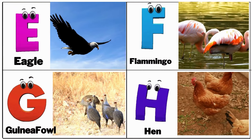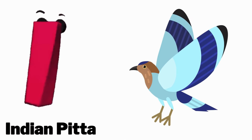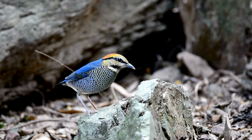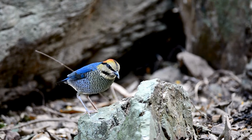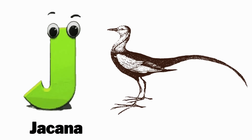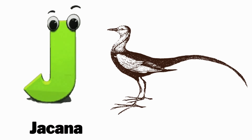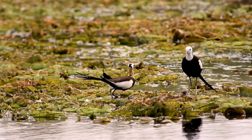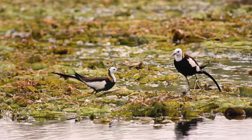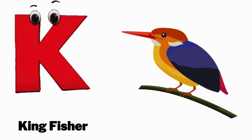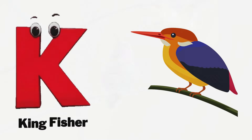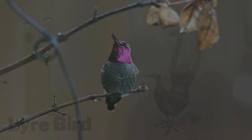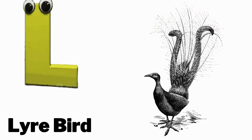I is for indian pitta, eh eh indian pitta. J is for jacana, juh juh jacana. K is for kingfisher, kuh kuh kingfisher. L is for lyrebird, luh luh lyrebird.